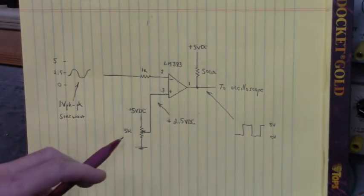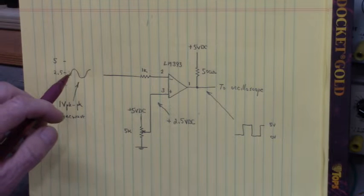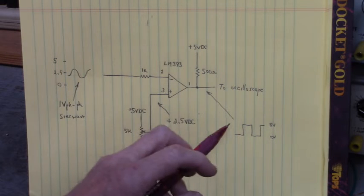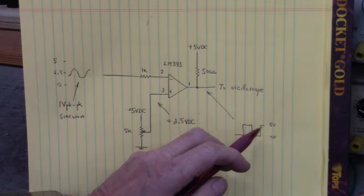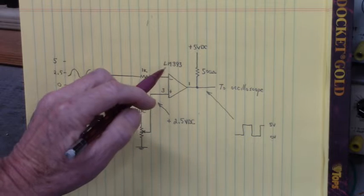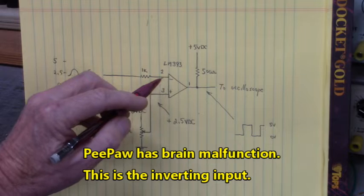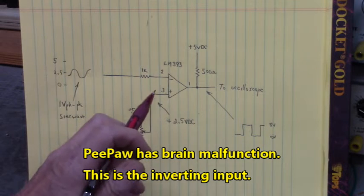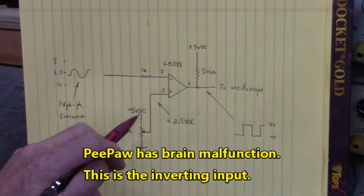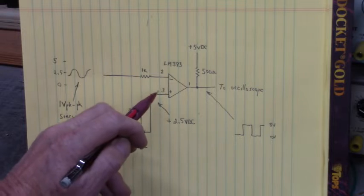Here is the circuit that is breadboarded that will convert a 1 volt peak to peak sine wave centered around 2.5 volts to a square wave of 0 to 5 volts. The sine wave will be input to the LM393 voltage comparator on the non-inverting input pin 2. Here we will set up pin 3 with this 5 kilo ohm potentiometer so that pin 3 has a voltage of 2.5 volts on pin 3.